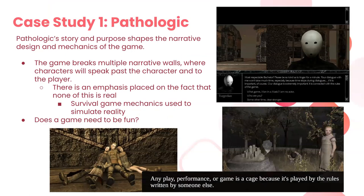There are multiple narrative wall breaks in Pathologic. At the very beginning of the game, a Tragedian speaks directly to you: 'Please be kind and linger for a minute — your dialogue with me won't take much time, especially because time stops during dialogues. Our dialogue is extremely important; it is connected with the rules of the game.' This is the very first interaction you have with any character — essentially a tutorial discussion that breaks the fourth wall.